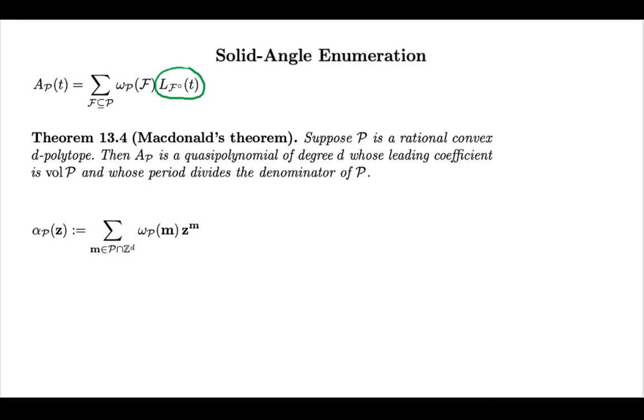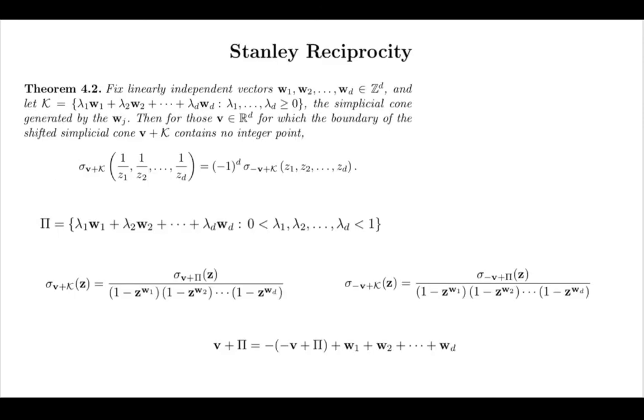We'll call this multivariate generating function α_P. When we did this in the classical case for integer point transforms, the central theorem was Stanley reciprocity. I'm reminding you here. So this was the simplicial version,